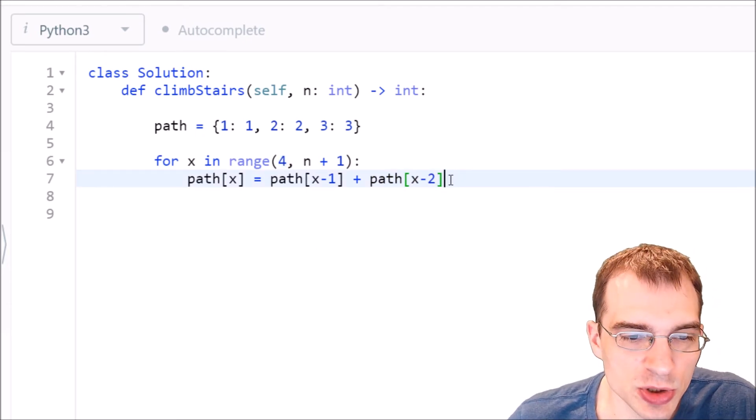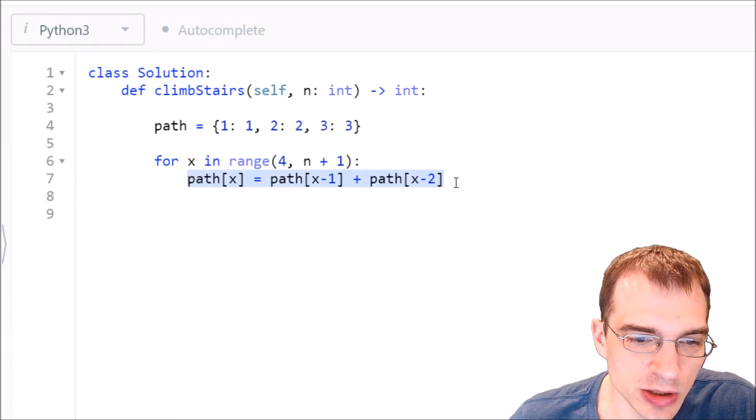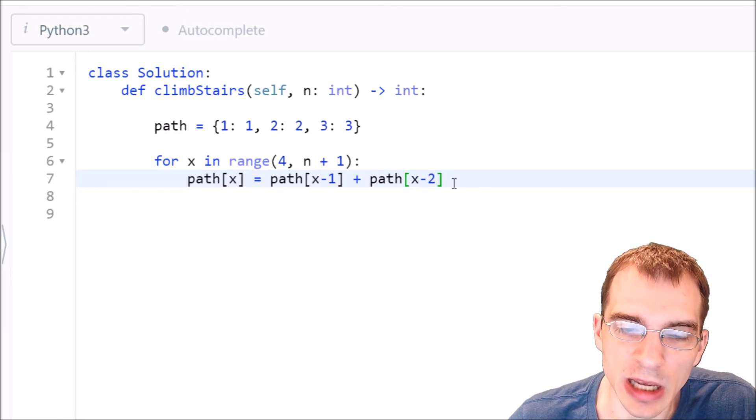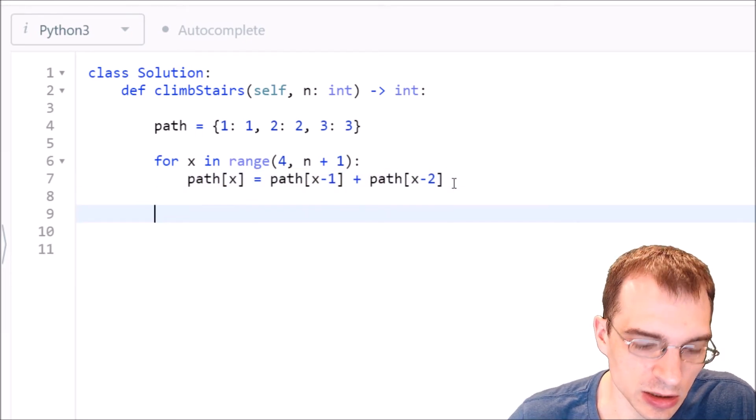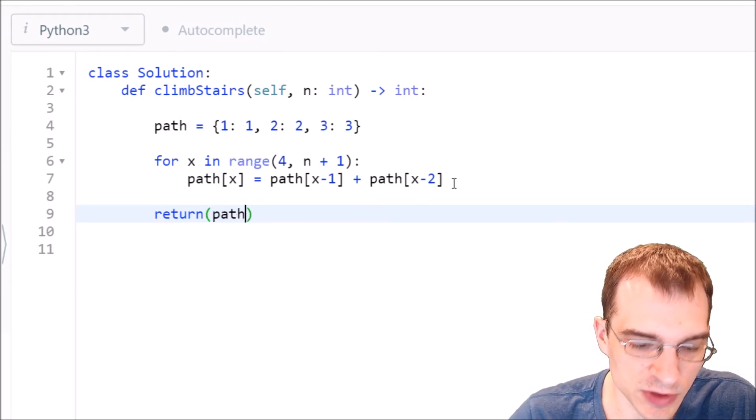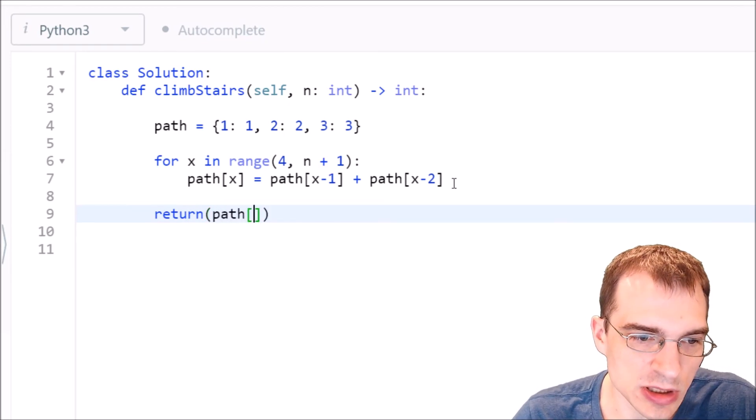So this for loop should do the necessary logic to calculate the number of possibilities to get up each staircase length all the way up to n. So all we have to do at the end then is return the path or the number of steps it took to get up to the staircase of length n.